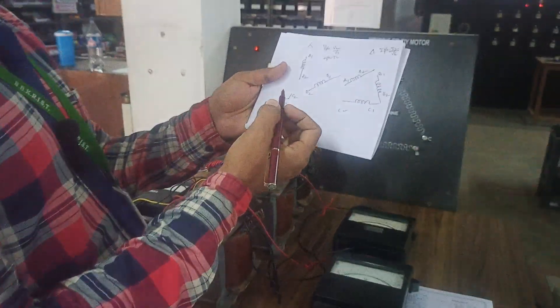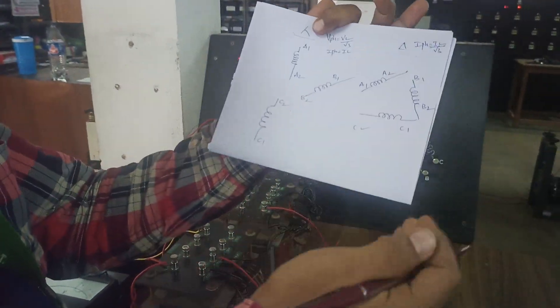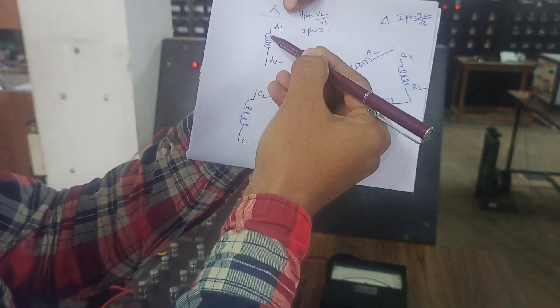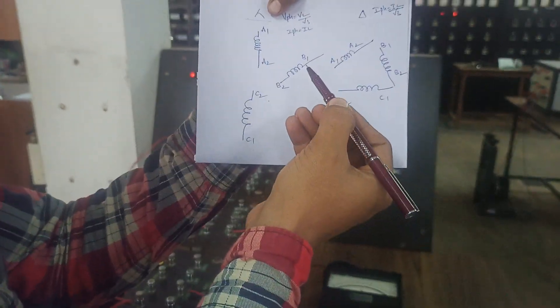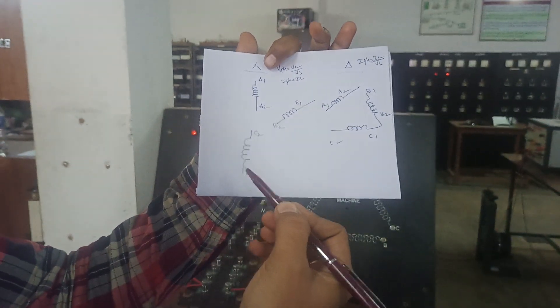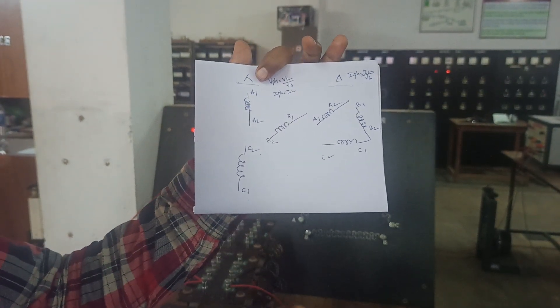Coming to the basic construction, a transformer will have two terminals — this is nothing but A1, A2 for single phase; for second phase B1, B2; for third phase C1, C2.